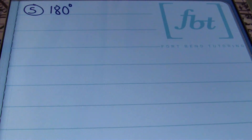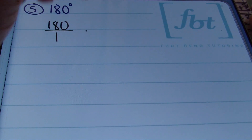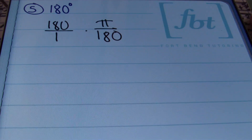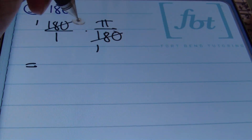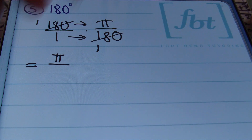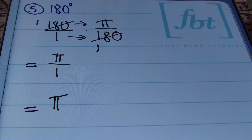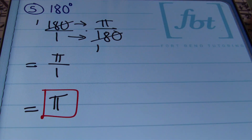Problem number 5: we have 180 degrees, and we're asked to change this into radians. We'll take 180 over 1 and multiply by the conversion factor π over 180. Simplifying: 180 goes into itself once on both sides. Multiplying straight across: 1 times π is π, and 1 times 1 is 1. π divided by 1 is π, and that's the answer.